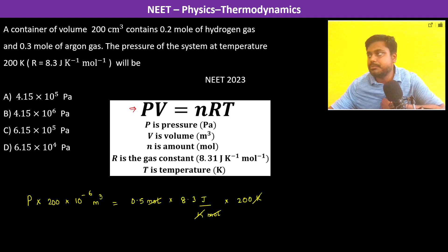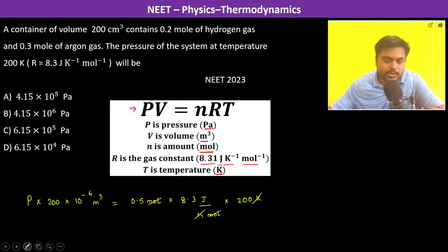The pressure is in Pascal, volume in meter cube, n in moles, R is 8.3 Joule per Kelvin per mole, and temperature in Kelvin. We have written down the same units. So the pressure is going to be - now you see 200 and 200 gets cancelled.